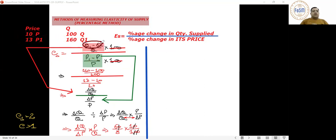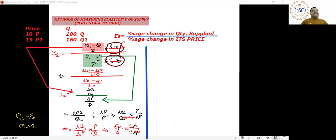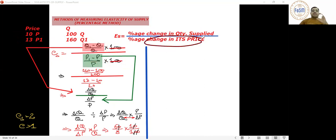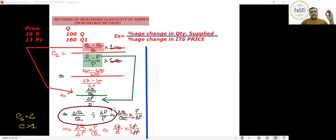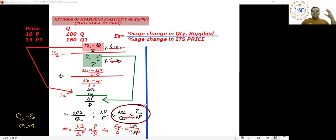Such change will be divided by original quantity and original price respectively and multiplied by 100, resulting in percentage change in quantity supplied and percentage change in its price. The formula can be further interpreted as: delta Q upon Q, divided by delta P upon P. Further, it can be shown in multiplication form: delta Q upon Q into P upon delta P.